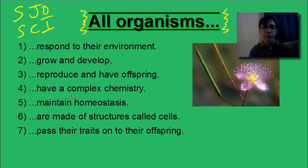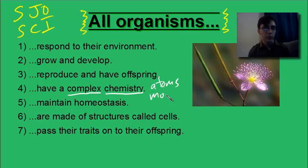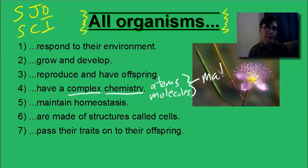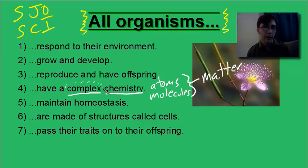Last time, we saw that all living things have a complex chemistry. Remember that chemistry is when we talk about atoms and molecules. Atoms are smaller than molecules. Molecules are made of more than one atom. The point is that atoms and molecules are some of the smallest pieces of matter, and living things are made of atoms and molecules as well. In short, living things are not simple at the atomic and molecular levels.